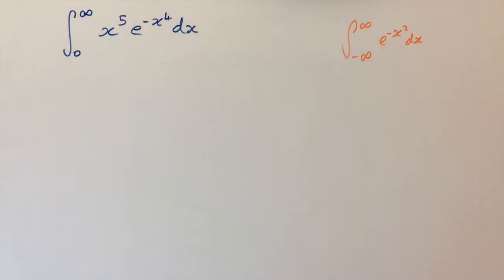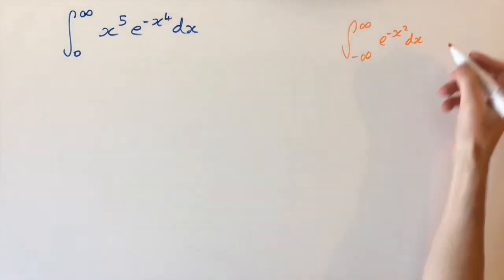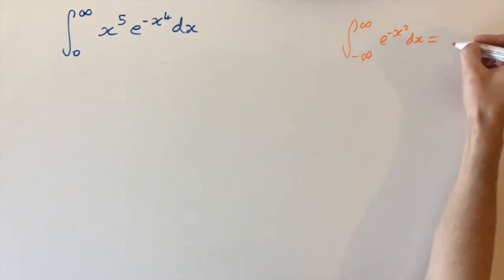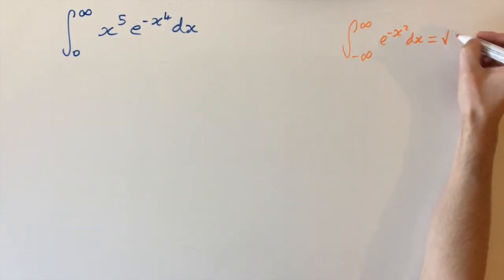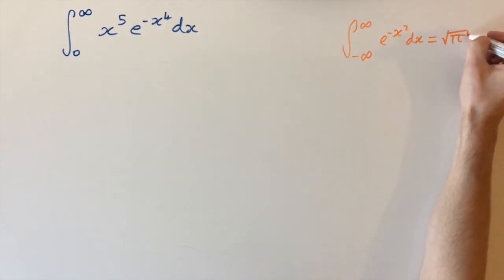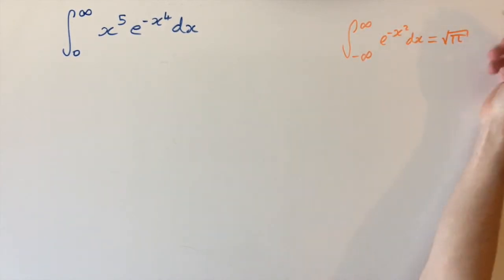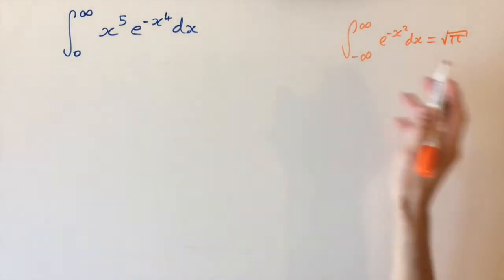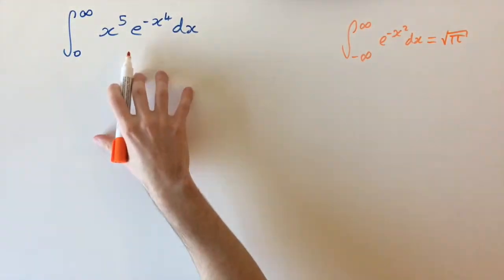We can solve the Gaussian integral using a change of coordinates from Cartesian to polar coordinates to get the result that it equals the square root of pi. This is a really nice result in itself. We're not going to derive it here, but we're going to use it to find the value of our integral.